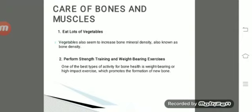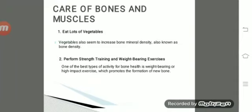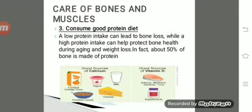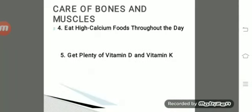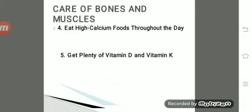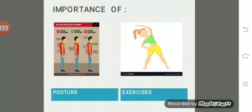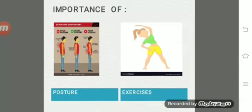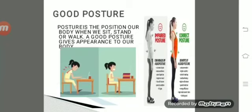To care for our bones and muscles, we should eat lots of vegetables, which increase bone mineral density. We should perform strength training and weight-bearing exercise, which promotes the formation of new bones. We should also consume a good protein diet, since 50% of bone is made up of protein. Eat high-calcium foods throughout the day and take plenty of vitamin D and vitamin K.